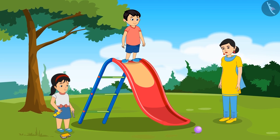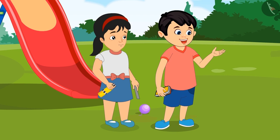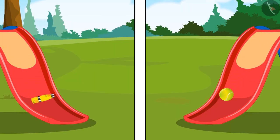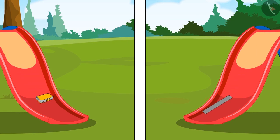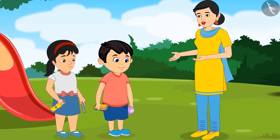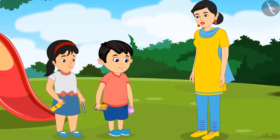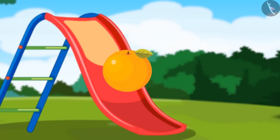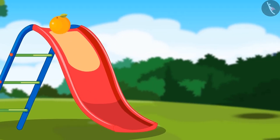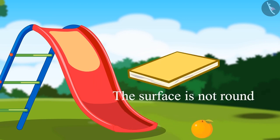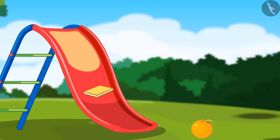'Rightly said, Chotu! So mommy, this means that all round objects roll and the rest of the objects slide down, is it so?' 'Yes Chotu, the objects that have a round surface, they roll — just like this orange, it is round so it will roll. And if the surface is not round, like this notebook, then it will slide.'